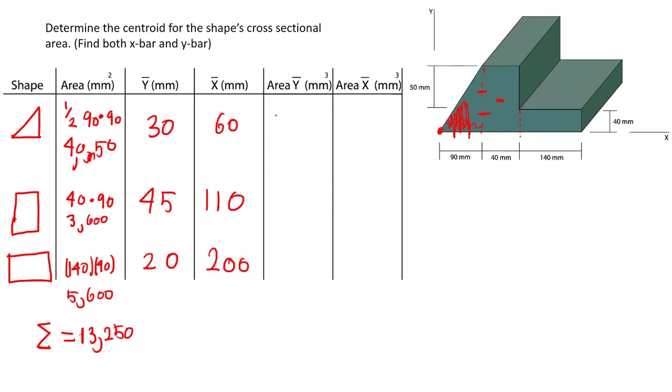And then finally all we do is multiply the area by the y-bar for each shape. So this is going to be 121,500. This is going to be 162,000. This is going to be 112,000. You know you're doing these right when you get big numbers by the way.